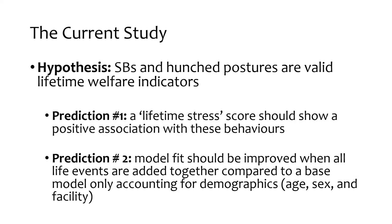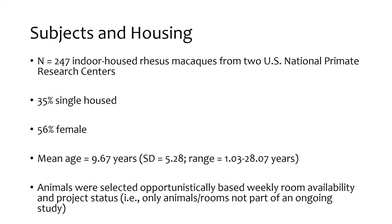The current study tested the hypothesis that stereotypic behaviours and hunched postures are valid lifetime welfare indicators. This hypothesis makes two predictions: first, a lifetime stress score should show a positive association with these behaviours; second, model fit should improve when all welfare-relevant life events are added together, compared to a model only accounting for demographics neutral to welfare such as age, sex, and facility. I observed 247 indoor-housed rhesus macaques from two US primate facilities: 35% single-housed, 56% female, with a mean age of 9.67 years ranging from 1 to almost 30 years.